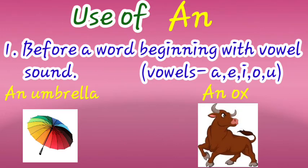Now the use of 'an': 'an' is used before a word beginning with a vowel sound — स्वर ध्वनि. We learned 'a' is used before consonant sounds, and 'an' is used before vowel sounds (अ से लेकर उ तक). For example: 'an umbrella' — sound of 'a' (vowel); 'an ox' — sound of 'o' (vowel). So wherever vowels A, E, I, O, U appear or a vowel sound occurs, we use 'an.'